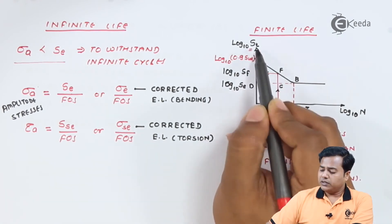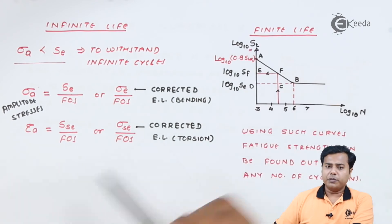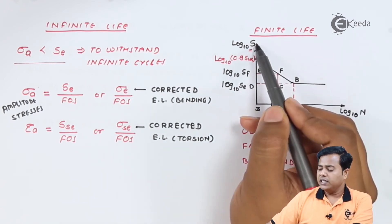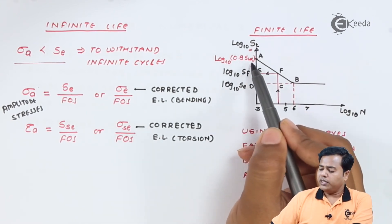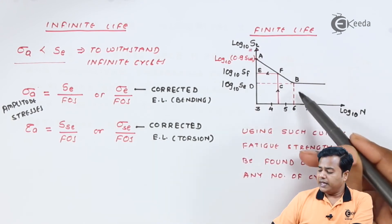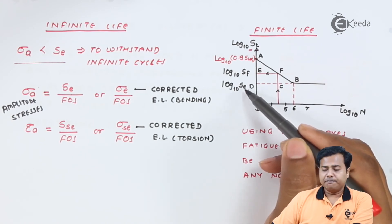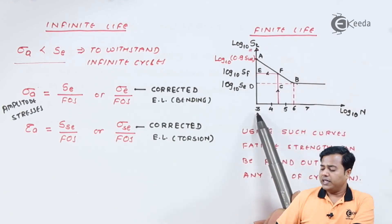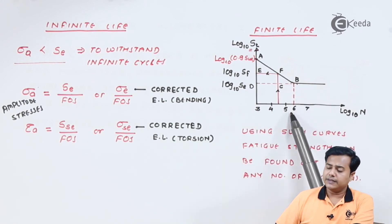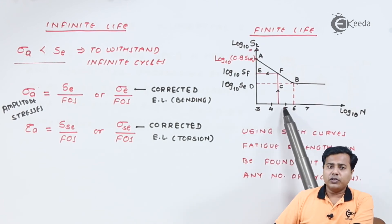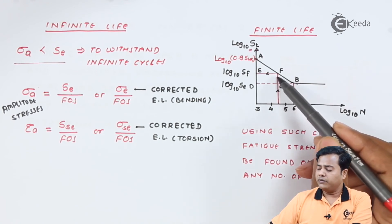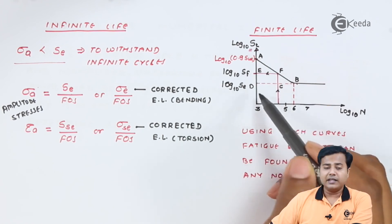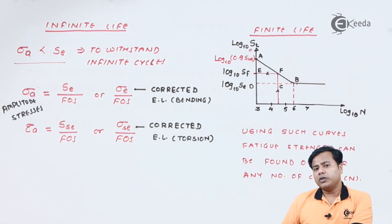Let us understand how the SN curve is used. This is a log-log paper, so both axes are converted into logarithmic values. The vertical axis represents stress and the horizontal axis represents number of cycles. We start with point A at 0.9 times the endurance limit and end at the endurance limit SE. Connecting these two points gives the starting and ending points of the curve. The starting point lies at 10³ cycles and the end point at 10⁶ cycles. For any number of cycles in between, we plot a vertical line upward; it cuts this line at a certain point, through which we draw a horizontal line. The value where this line cuts the y-axis gives us the fatigue strength for that particular number of cycles.